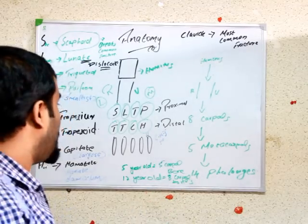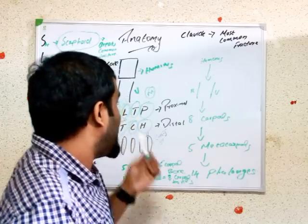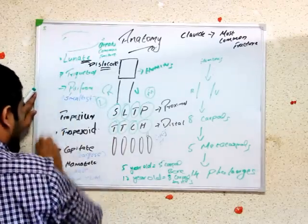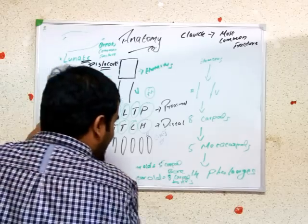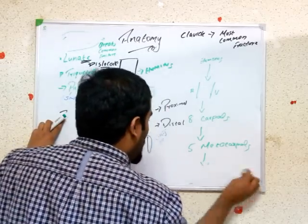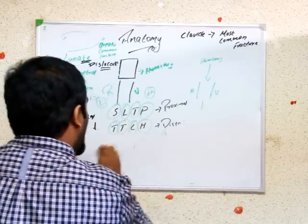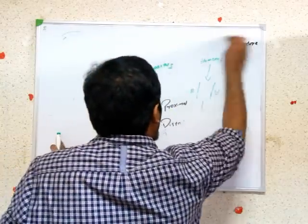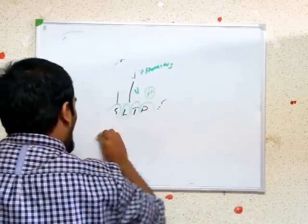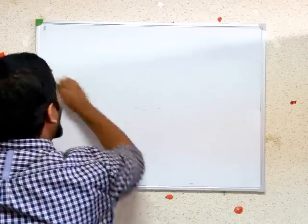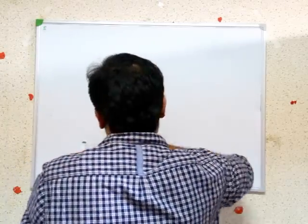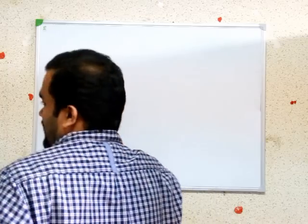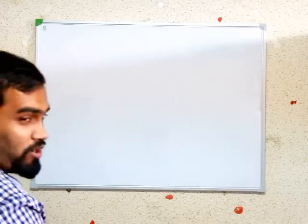Carpal bones are completely developed by puberty — around 12 years. So if a child has six carpal bones, they are six years old. This clinical value is only applicable up to 12 years; after that, all carpal bones are present. So don't try this on your girlfriend — she will have all eight bones and might slap you! Also remember: scaphoid is the common carpal bone to be fractured.